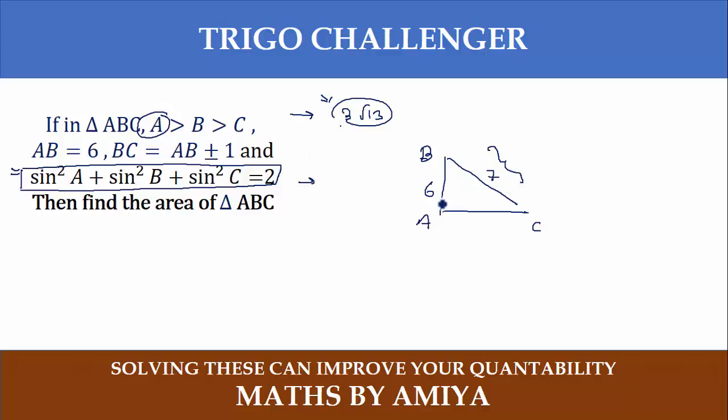By Pythagoras we have 7² - 6² which is nothing but √13, and the area is nothing but ½ × base × height.